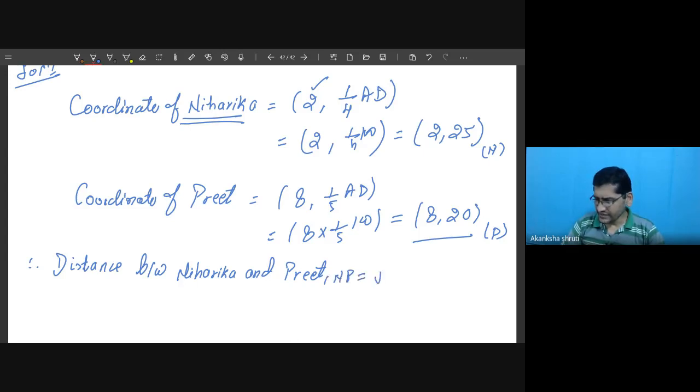Here just you write down the distance formula: difference of their x coordinate squared plus difference of their y coordinate squared. So here just you have to substitute this.